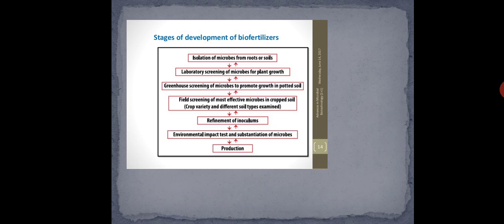Then laboratory screening of microbes for plant growth is done. Screening means: if there are thousands of bacteria in the soil, you re-culture and isolate them, then filter them. From thousands of microbes, you screen 2-3 populations of that microbe that you need to use.